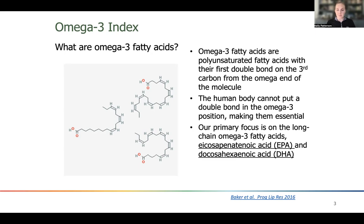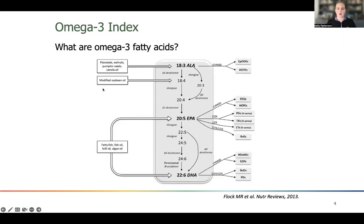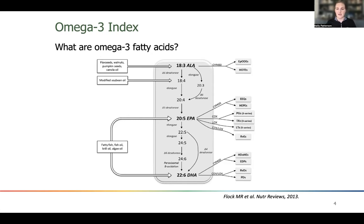There are really three different types of omega-3 fatty acids that we care about, but the primary ones of importance are EPA and DHA. The other type important to humans is alpha-linolenic acid, found primarily in plant sources — flax seeds, walnuts, pumpkin seeds, canola oil, things like that. These are healthy and important for health, but they're fairly easy to get into the diet.